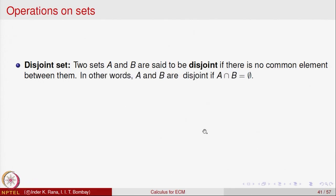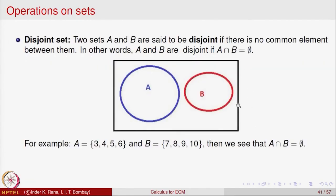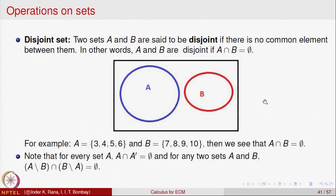Two sets A and B are called disjoint if there is no element common to both — that is, A ∩ B = ∅ (the empty set). In a Venn diagram, disjoint sets are represented as two non-overlapping circles. For example, if A = {3,4,5,6} and B = {6,7,8,9,10} — wait, one can also verify that a set and its complement are always disjoint, and A \ B and B \ A are also disjoint sets.